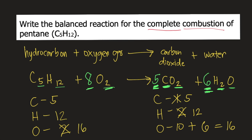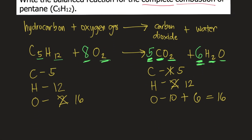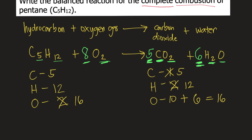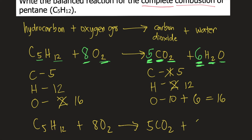Now that all elements are balanced, the reaction is already balanced. The answer to this question is: C5H12 plus 8O2 forms 5CO2 plus 6H2O.